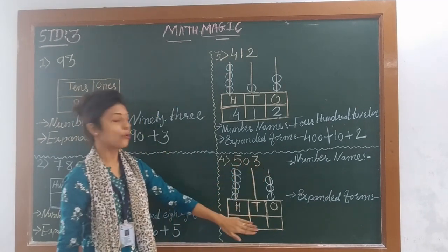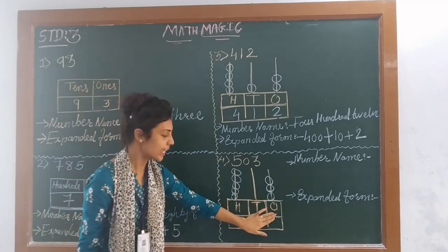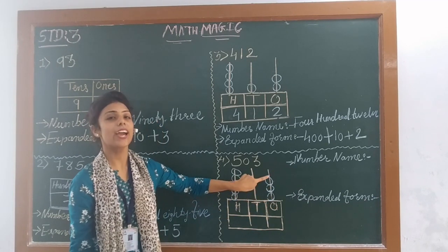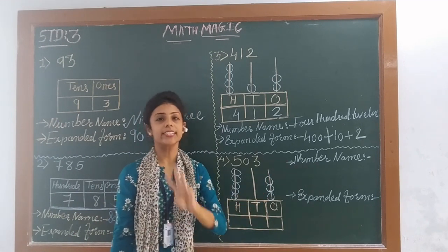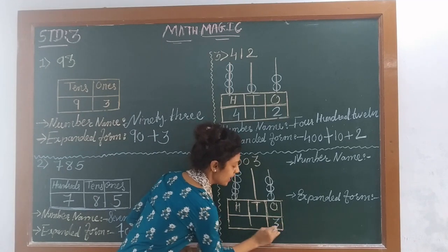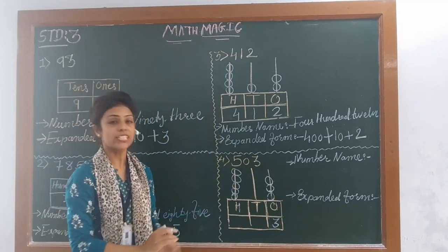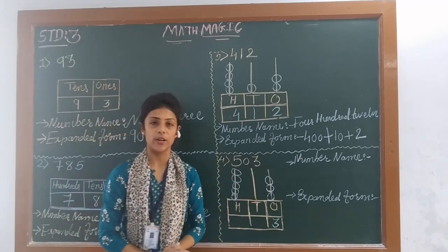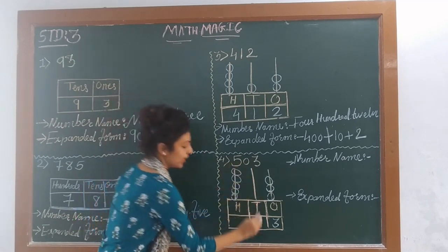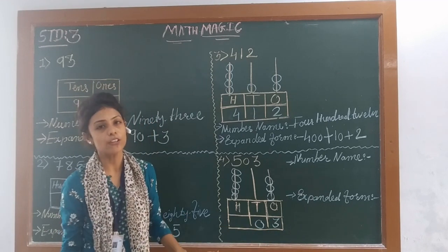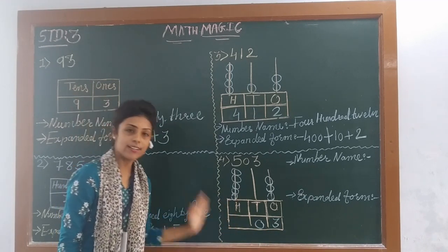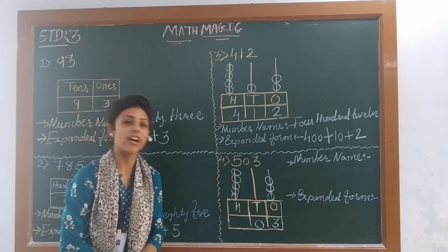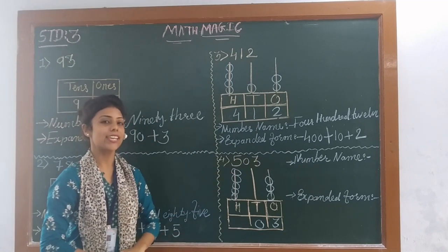Now see the next number, 503. On the abacus, at the 1's place, 3 beads are given, so 3 is at 1's place. At the 10's place, no beads are given, so it represents 0 — place value of 0 is always 0. At the 100's place, 5 beads are given, so 5 is at 100's place. So the number is 5, 0, 3.